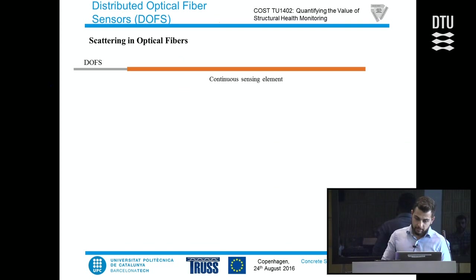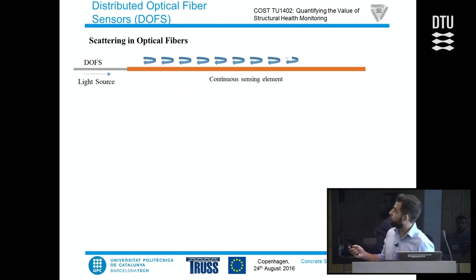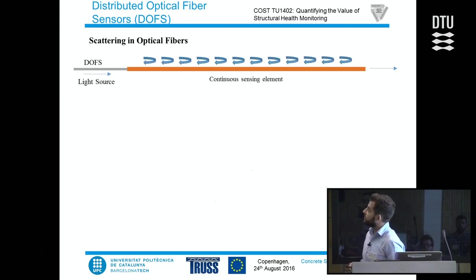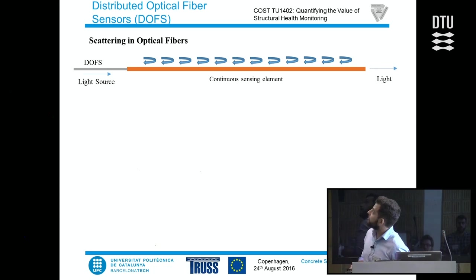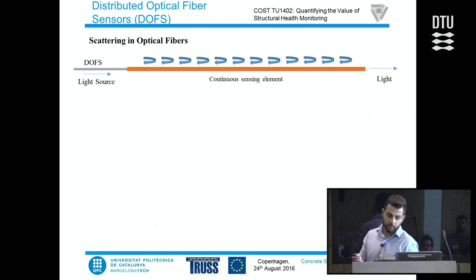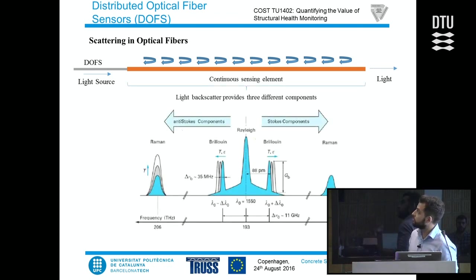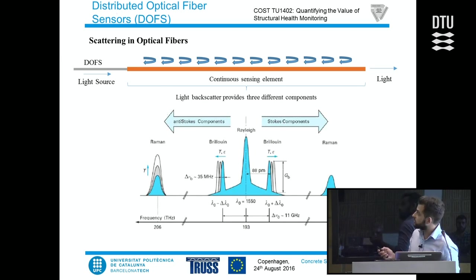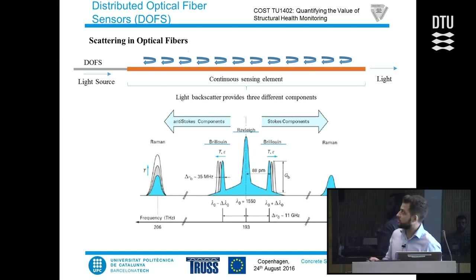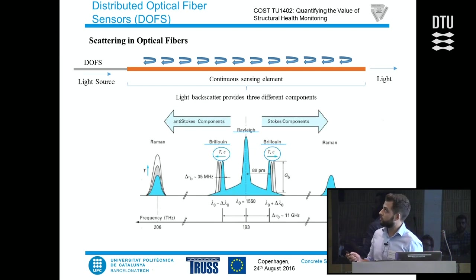These sensors work through the interaction between the light source and the optical fiber — a phenomenon called scattering. It occurs in all directions but it's the backscattering that we are mostly interested in. This backscattering provides three components: the Rayleigh component, the Brillouin component, and the Raman component.